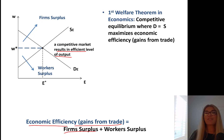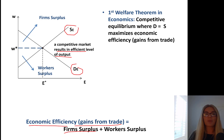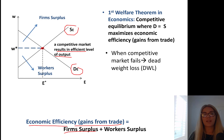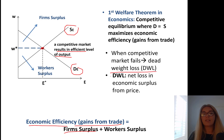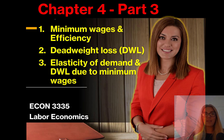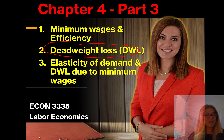The first welfare theorem in economics says that the competitive equilibrium — where labor demand and labor supply intersect — maximizes economic efficiency and gains from trade. When a competitive market fails, we have something called deadweight loss, which is the net loss in economic efficiency or economic surplus. In chapter 4, part 3, we'll learn about deadweight loss and its relationship with elasticity of demand. See you then.